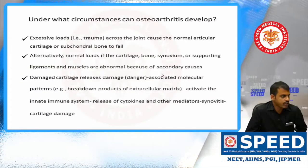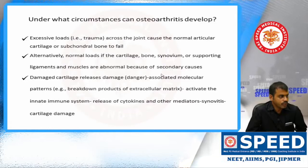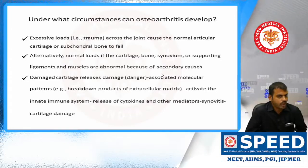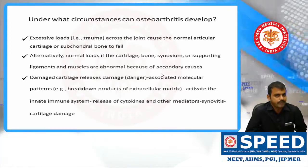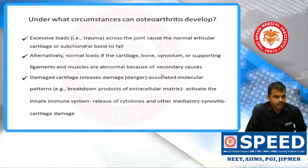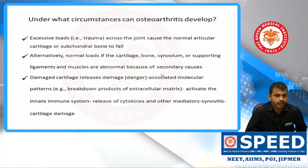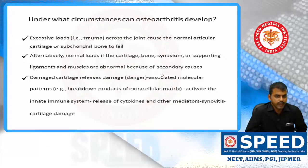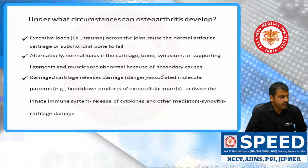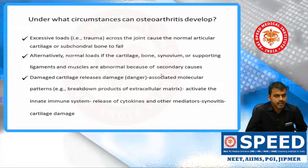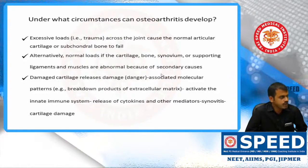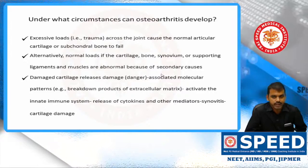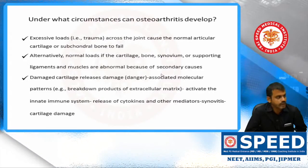OA can develop under two circumstances: one, a normal bone with abnormal loading — for example, obesity — or an abnormal joint that has been inflamed due to secondary causes with normal loading. When the cartilage gets damaged, there is release of danger-associated molecular patterns which activate the innate immune system. There will be release of cytokines and other mediators, causing synovitis and then further cartilage damage.